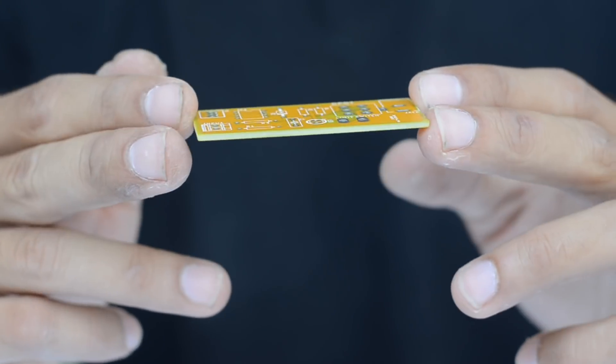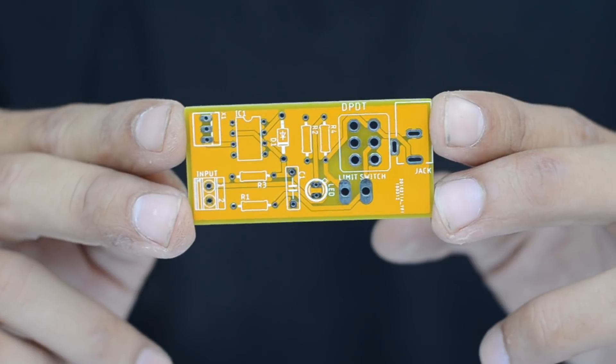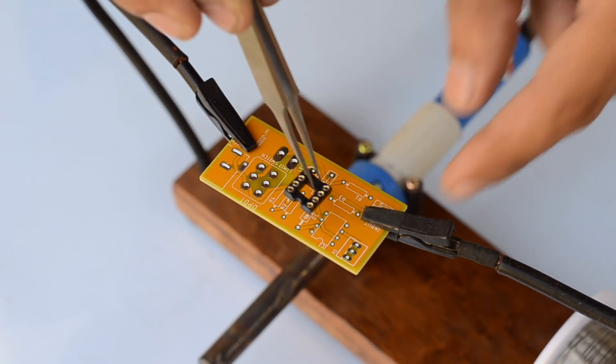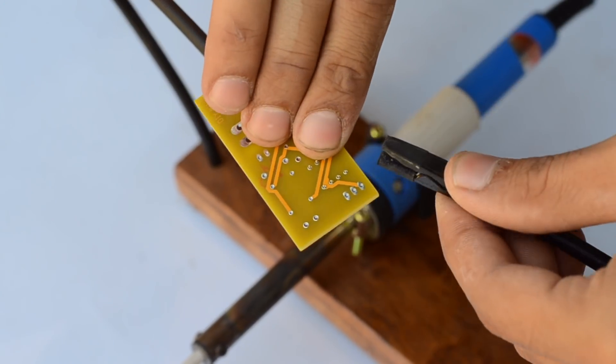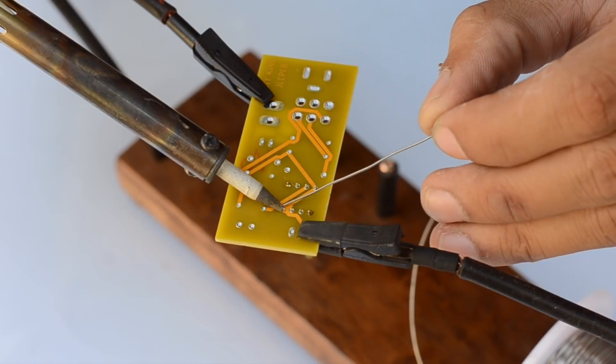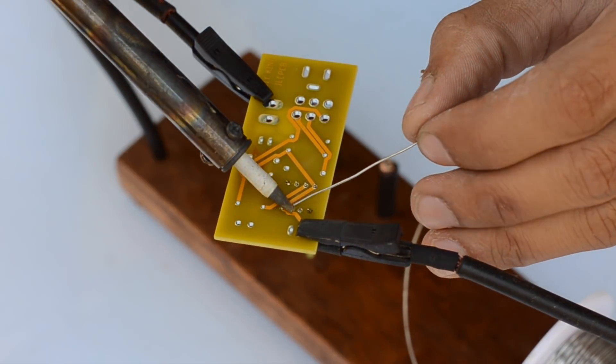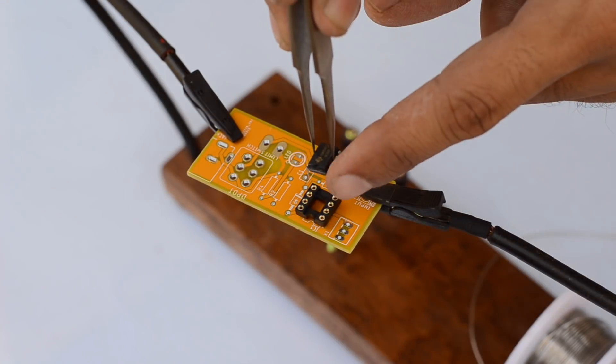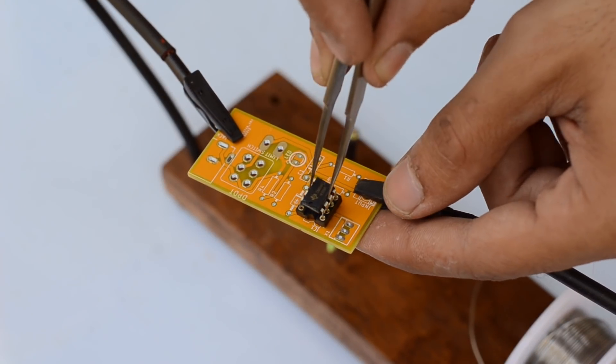Now I started soldering all the necessary components onto the PCB. First off, I placed an 8-pin IC socket onto the PCB. Make sure you place it with the notch in correct direction as shown on the PCB. Likewise, a similar notch is given on the 555 timer IC as well.